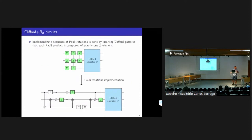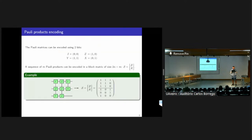Implementing a sequence of parity rotations means inserting some Clifford gates in the circuit so that each parity rotation is reduced to exactly one parity-Z element. The parity matrices can be encoded using two bits, and using this encoding we can encode a sequence of parity products into a matrix of size 2M times M, where M is the number of parity products. The upper part of our matrix corresponds to the first bit of our encoding, and the lower part corresponds to the second bit.